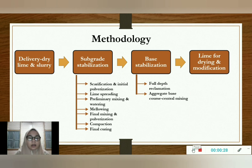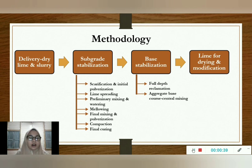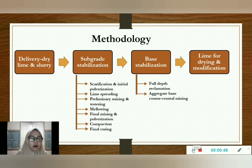In the delivery phase, there are two types of lime that can be used: dry lime and slurry. Dry lime is dry quicklime or hydrated lime, usually transferred using a self-unloading truck to the construction site. Slurry is made from quicklime or hydrated lime mixed with water.